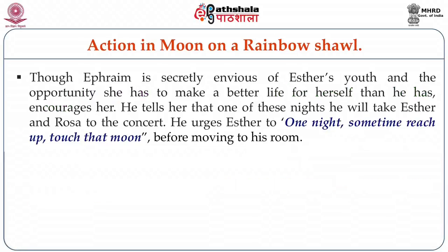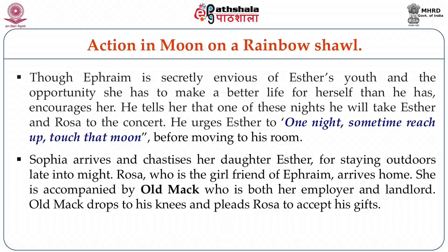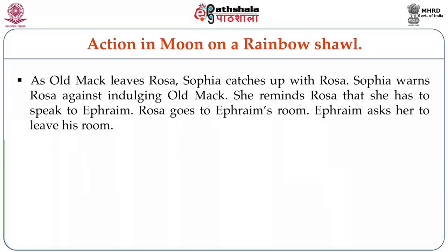Though Ephraim is secretly envious of Esther's youth and opportunity, he encourages her to make a better life for herself. He tells her that one of these nights he will take Esther and Rosa to a concert. He urges Esther to one night reach up and touch that moon. Sophia arrives and chastises her daughter for staying outdoors late into the night. Rosa, who is Ephraim's girlfriend, arrives home accompanied by Old Mac, who is both her employer and landlord. Old Mac drops to his knees and pleads with Rosa to accept his gifts. Sophia warns Rosa against indulging Old Mac and reminds her to speak to Ephraim. Rosa goes to Ephraim's room, but he asks her to leave; he is pensive and smoking a cigarette.